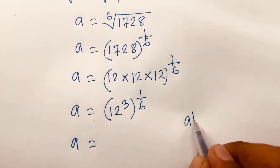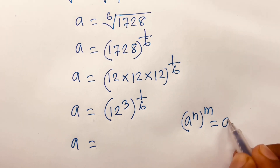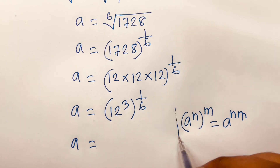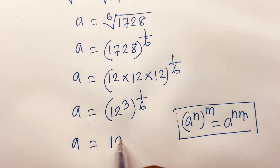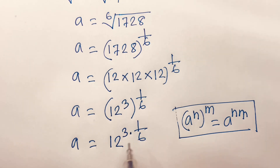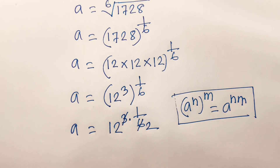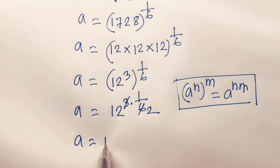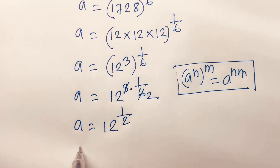Using the rule that (a^n)^m = a^(n×m), we get 12 to the power 3 times 1 over 6. Dividing 3 by 6 gives one half, so a is equal to 12 to the power one half.